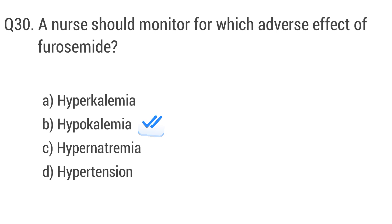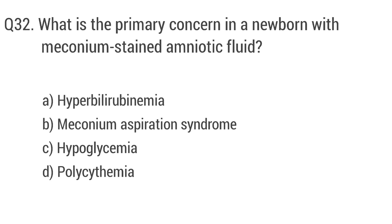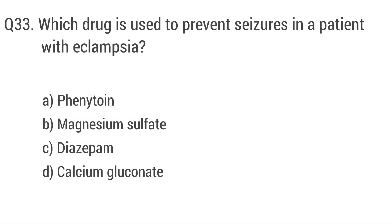Question 31: What is a common sign of preeclampsia? Question 32: What is the primary concern in a newborn with meconium-stained amniotic fluid? The right answer is option B: Meconium aspiration syndrome. Question 33: Which drug is used to prevent seizures in a patient with eclampsia? The right answer is option B: Magnesium sulfate.